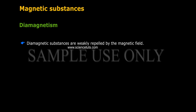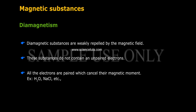Diamagnetism: Diamagnetic substances are weakly repelled by the magnetic field. These substances do not contain unpaired electrons. All the electrons are paired, which cancel their magnetic moment. Examples: H2O, NaCl, etc.